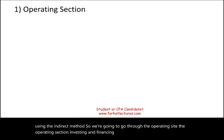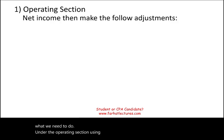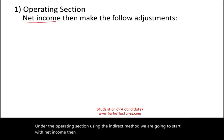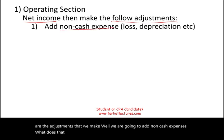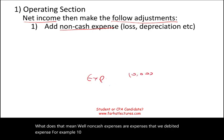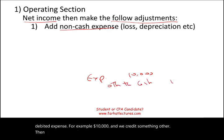Let's walk through the map of what we need to do. Under the operating section using the indirect method, we are going to start with net income. Then we are going to make adjustments. We are going to add non-cash expenses — expenses where we debited expense, for example $10,000, and credited something other than cash for $10,000.